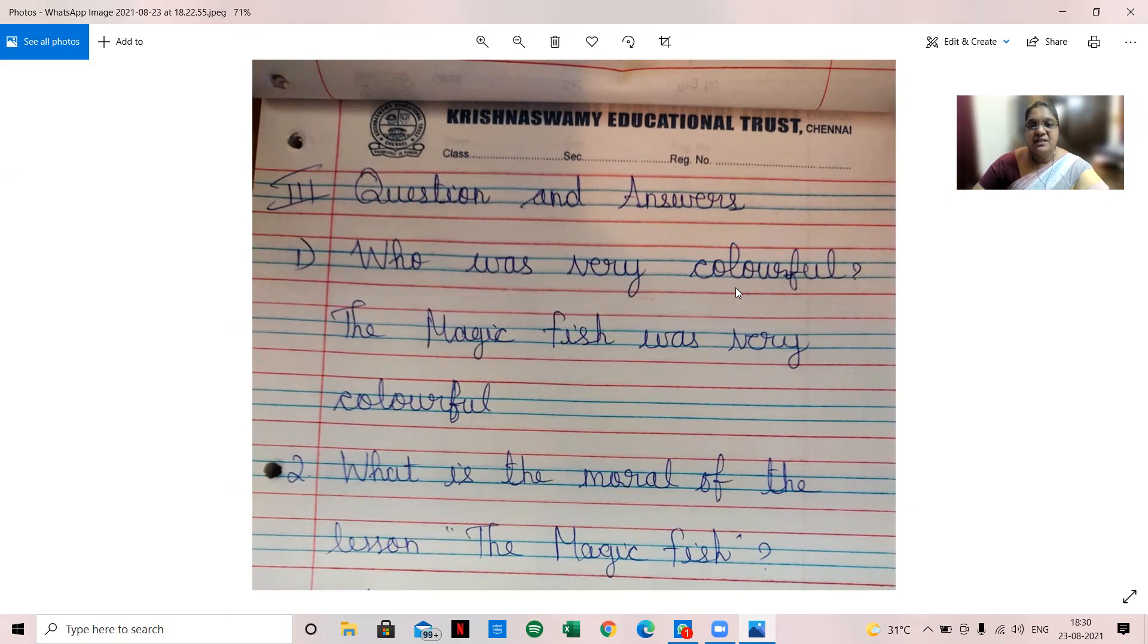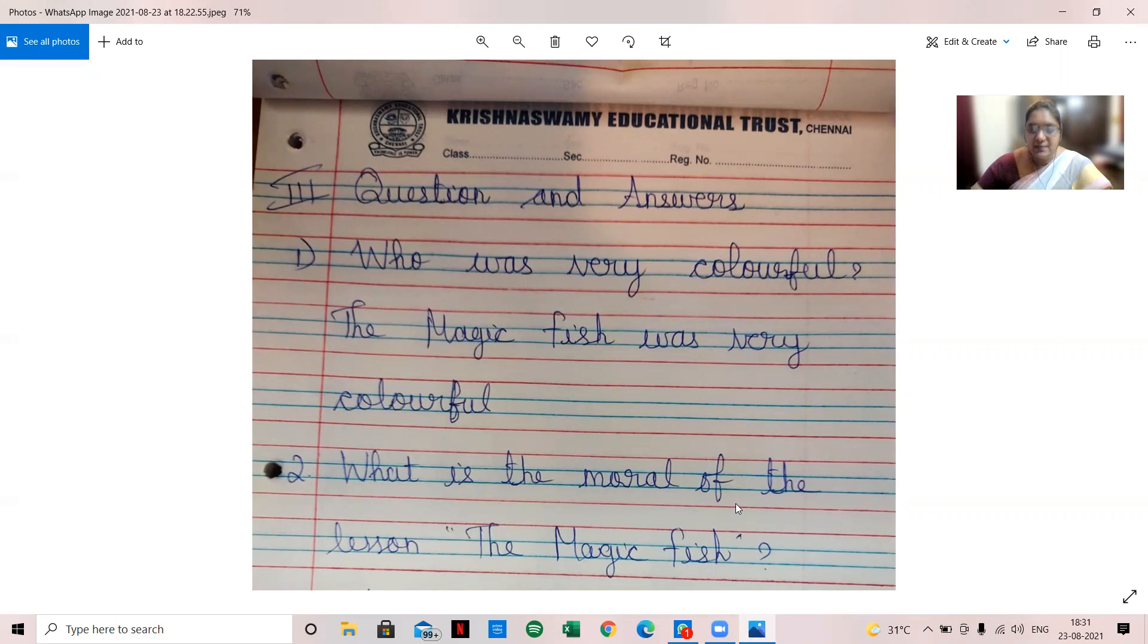W-H-O who, W-A-S was, V-E-R-Y very, C-O-L-O-U-R-F-U-L colorful. Who was very colorful? The magic fish was very colorful. You all very well know the magic fish was very colorful. You know to say it, but you should know to write also.